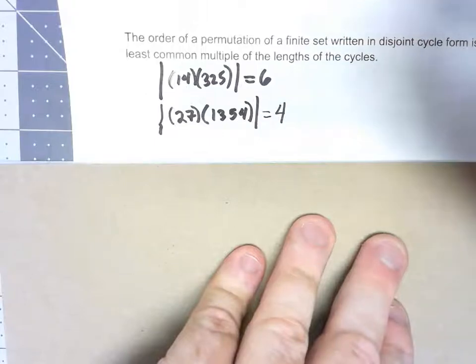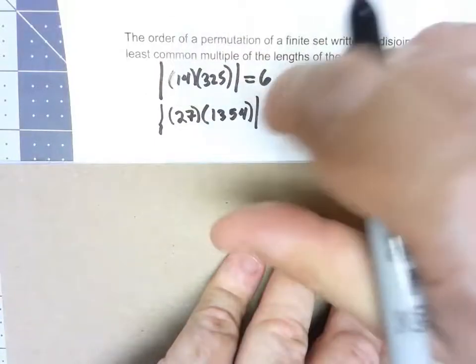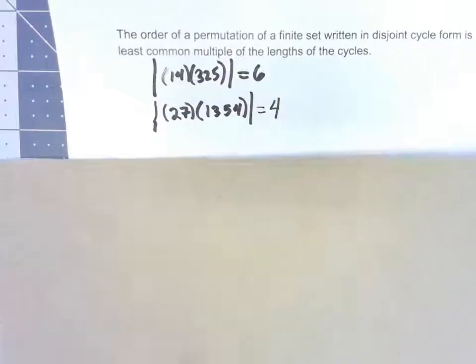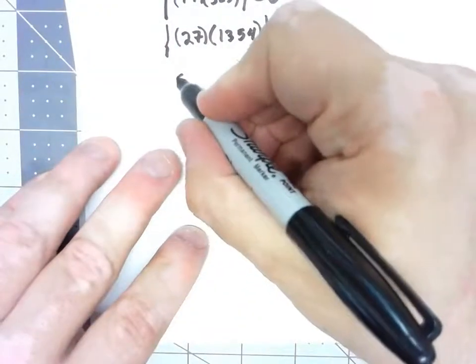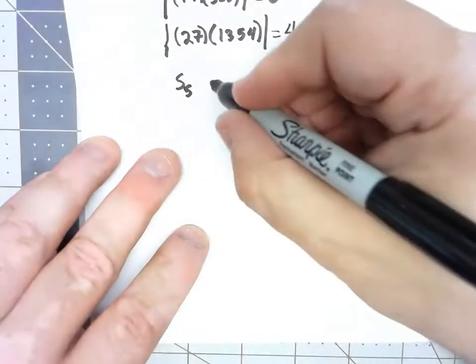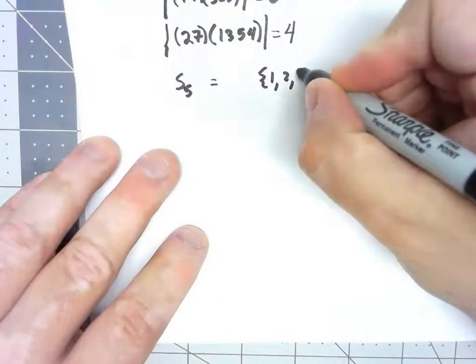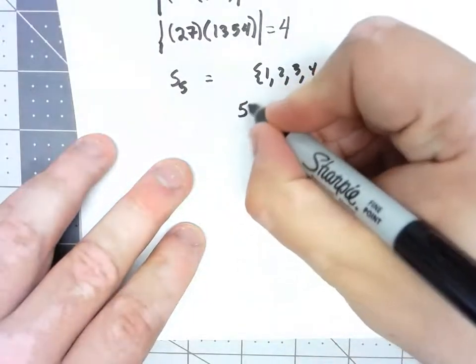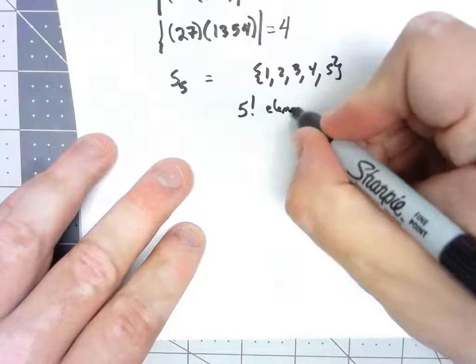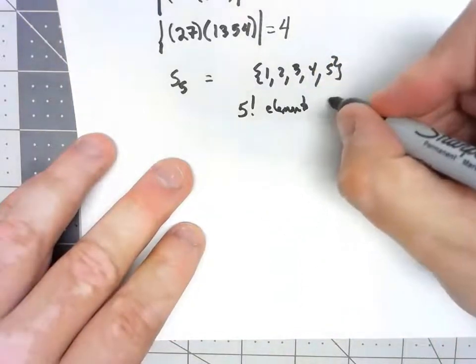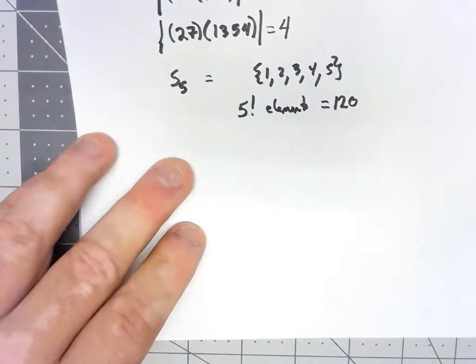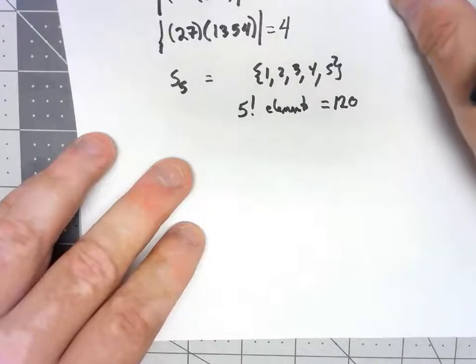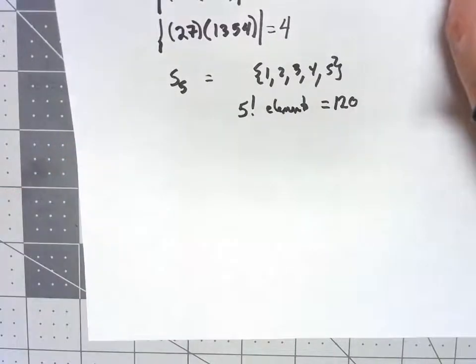What this lets us do is very quickly classify all the elements in a permutation group, perhaps without even knowing what they are. So for example, let's consider S5. We know that's all the permutations of the set {1,2,3,4,5}. And in fact, that's going to have 5 factorial elements. There's 5 factorial permutations on that, which is 120 different permutations. I certainly don't want to write out what all 120 are, but we can actually start thinking about what are they like.